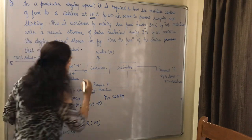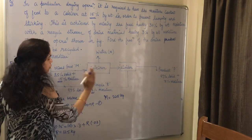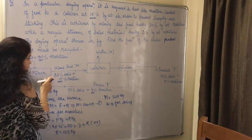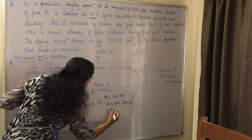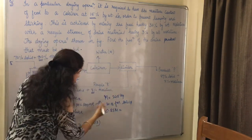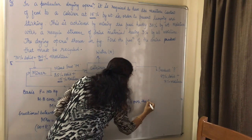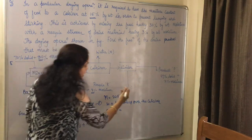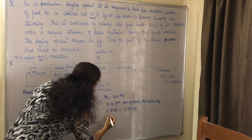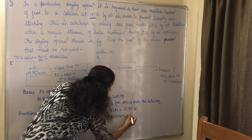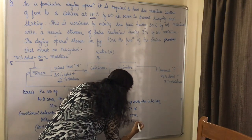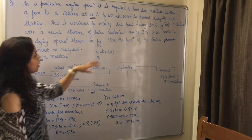Next, we do the material balance for solids in the calciner. 85% solid is entering the calciner, so 0.85·M enters, and 97% solid is leaving. The balance is 0.85·M = 0.97·X. With M = 225 kg, solving gives X = 197.16 kg.